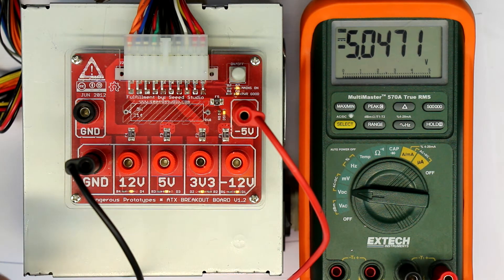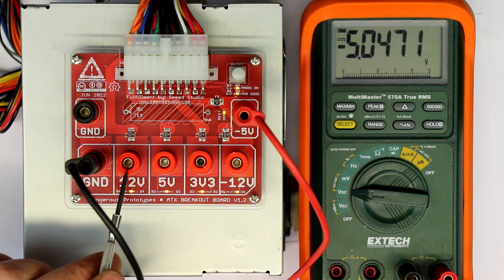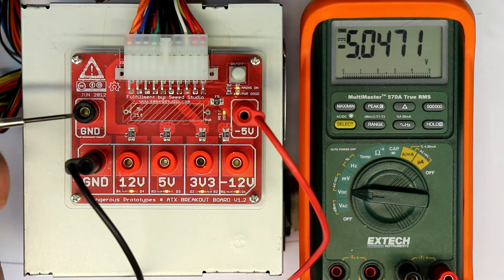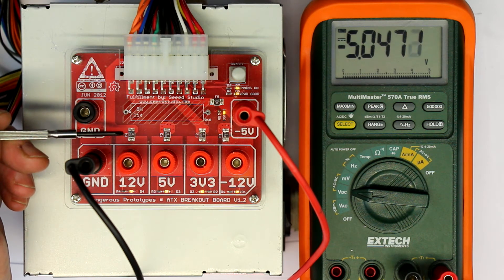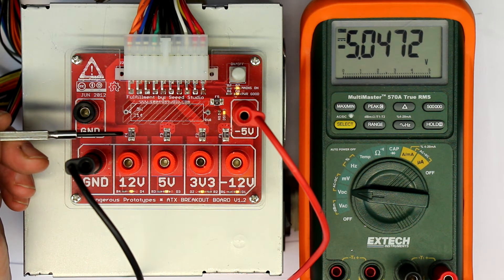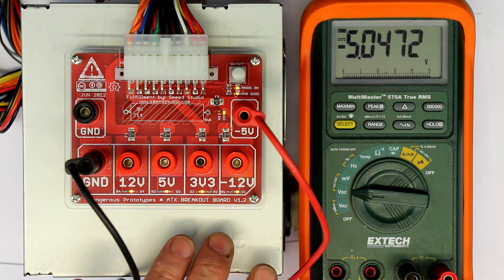And what's nice is each voltage is fused by a polyfuse, by a resettable polyfuse with I think three quarters of an amp. So you can't destroy your old ATX power supply.